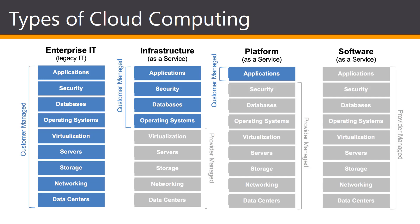The final level is Software as a Service, or SaaS, which provides you with a complete product that is run and managed by the service provider. In most cases, SaaS refers to end-user applications. With a SaaS offering you do not have to think about how the service is maintained or how the underlying infrastructure is managed — you only need to think about how you will use that particular piece of software. A common example of a SaaS application is web-based email such as Hotmail or Gmail.